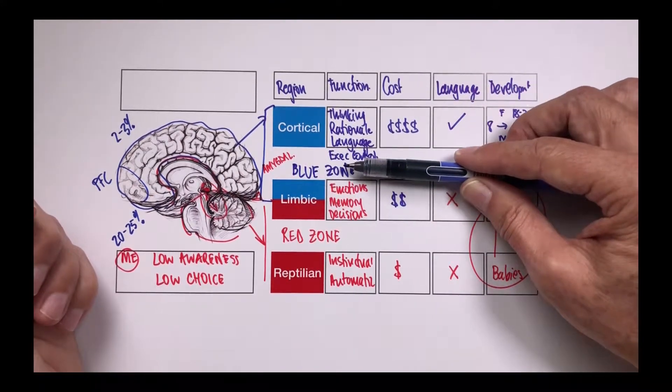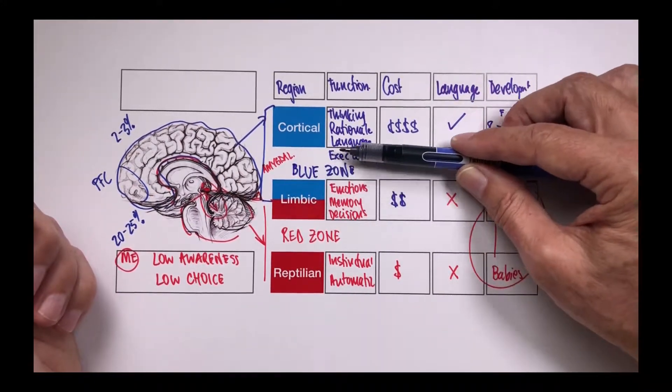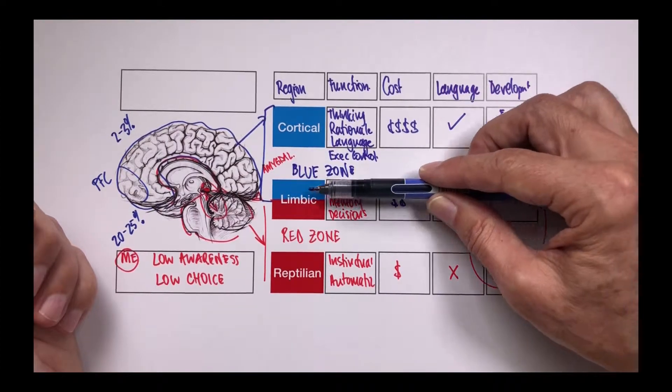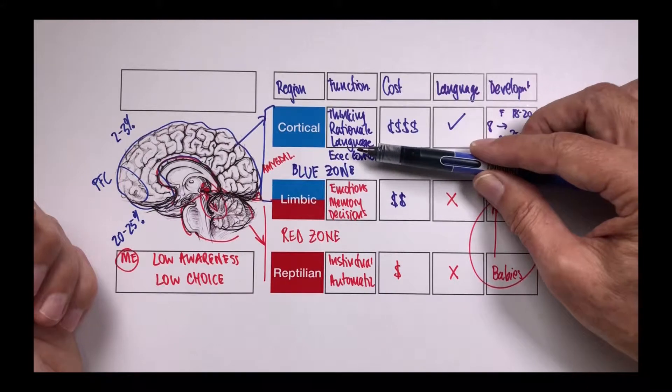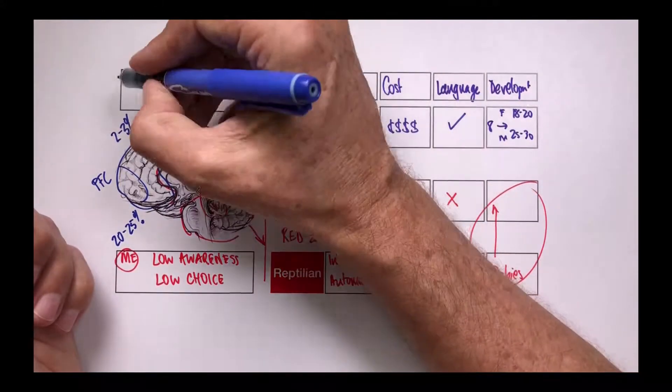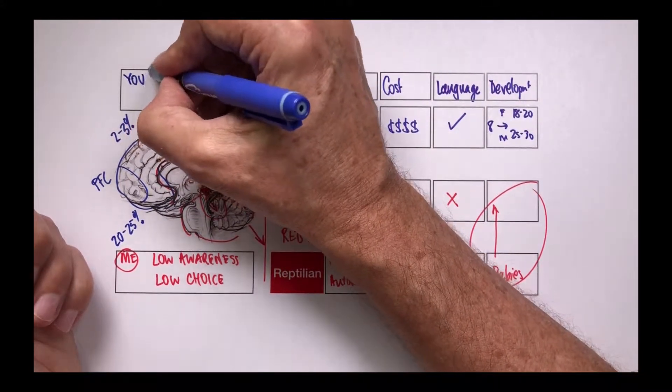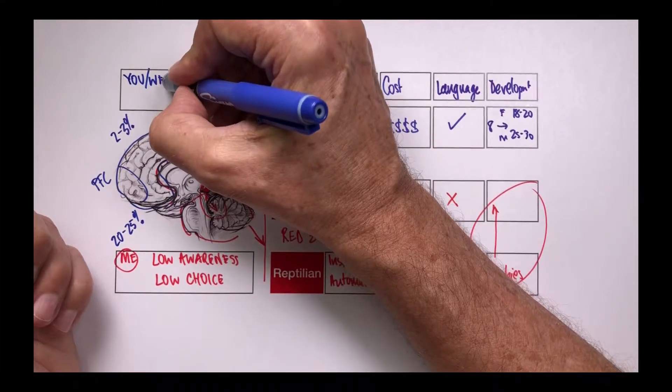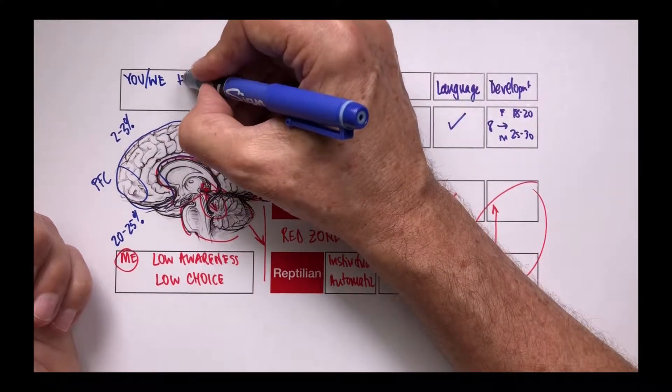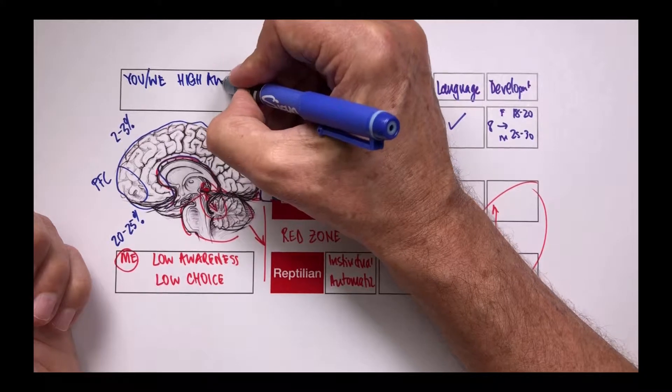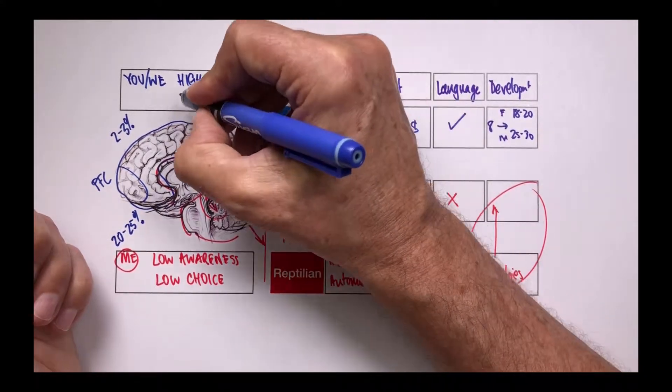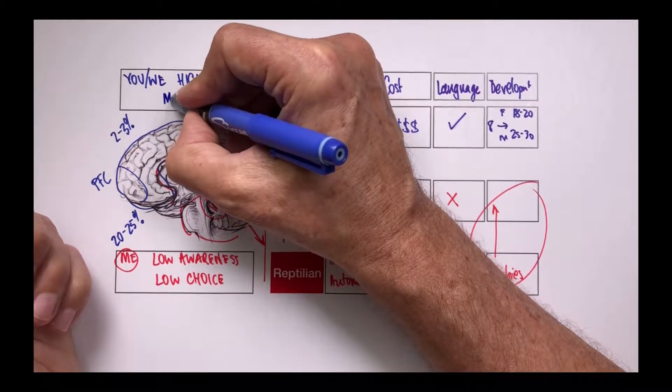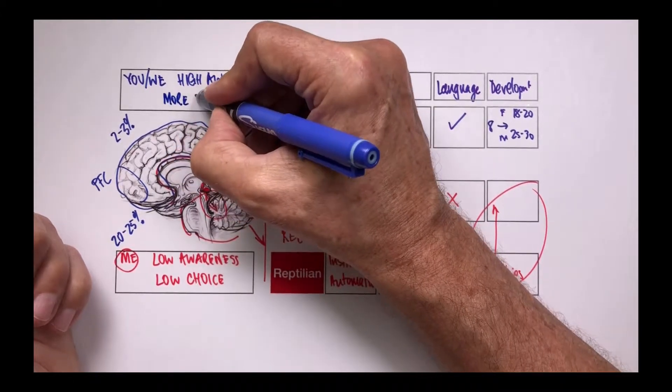So we can be aware of our emotions. We can be aware of the impact of our emotions on others. We can make some modification of our behavior or our choices and our focus is on you or we instead of me. The awareness is higher and our choices are more available. We have more choices available.